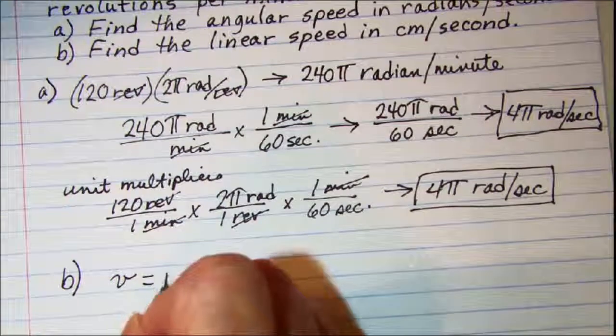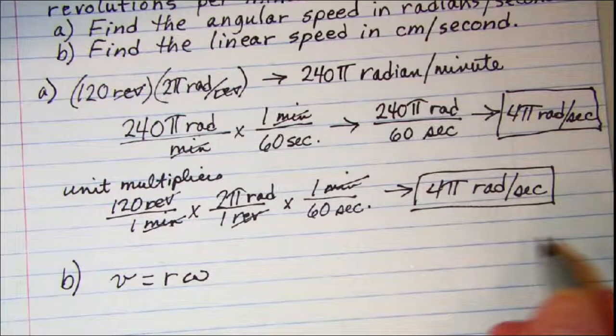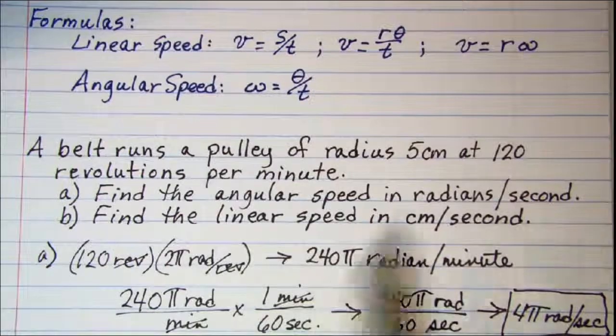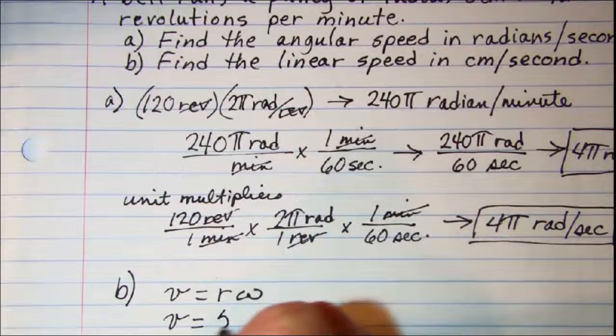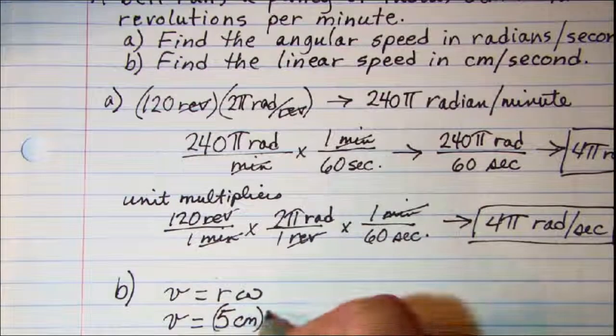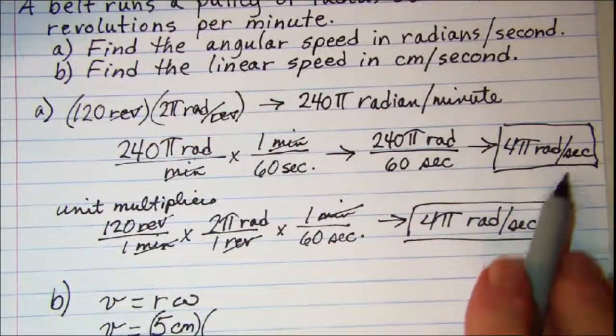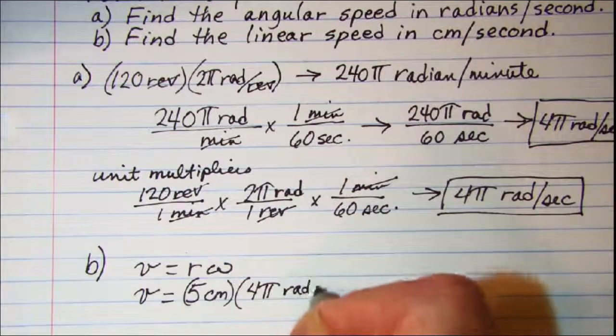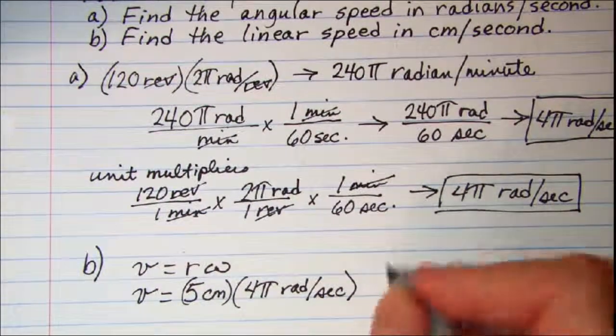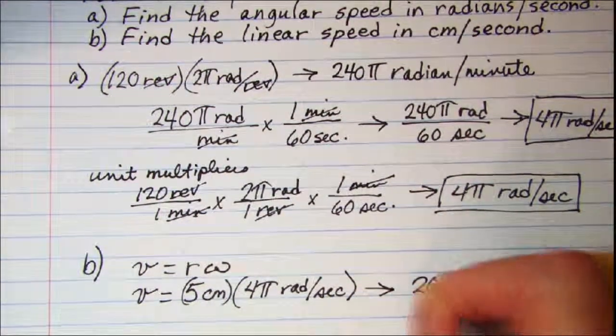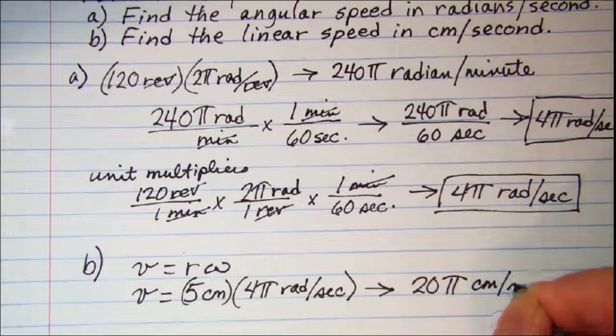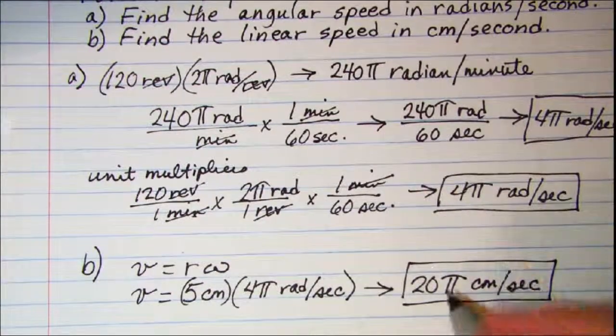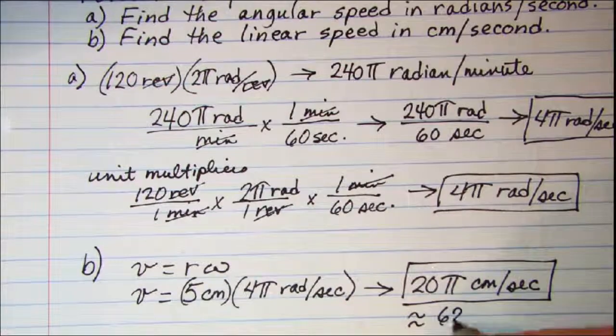Velocity equals radius times the angular speed omega. We want our radius which is 5 centimeters. And we want to multiply that by the angular speed which was 4π radians per second. And that will give us 20π centimeters per second. This is approximately 62.8 centimeters per second.